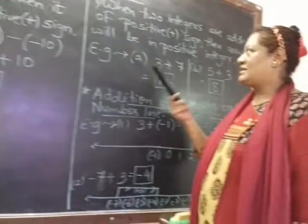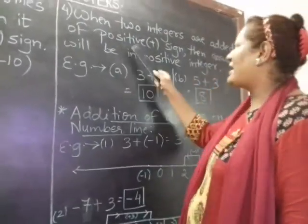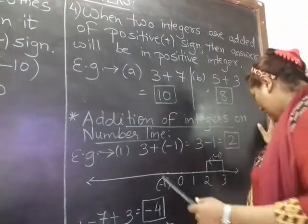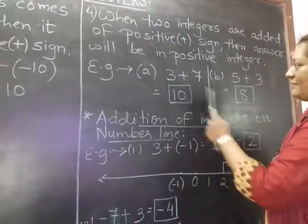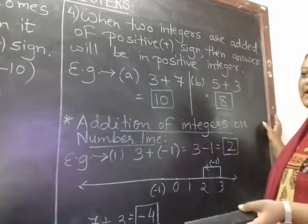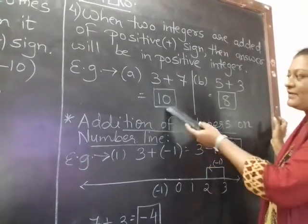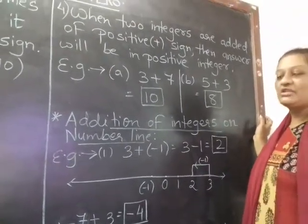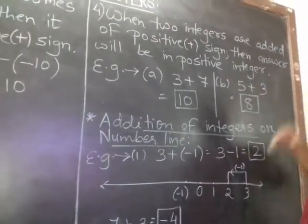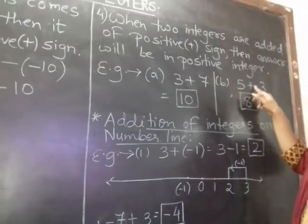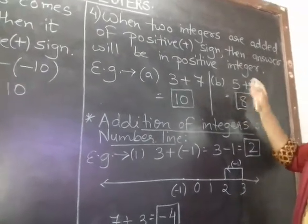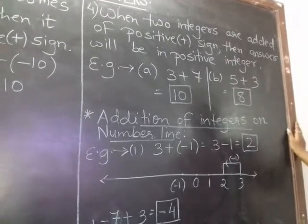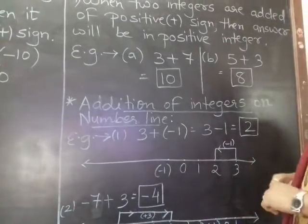This is the rule which is easy: when two positive integers are added with a positive sign, the answer will definitely be a positive integer. When 3 and 7 are added, neither number has a negative sign, so both are added and the answer is a positive integer. Similarly with 5 and 3 — both are added and the answer is compulsorily a positive integer.